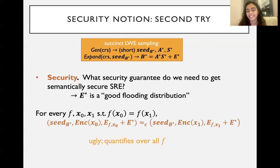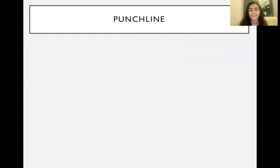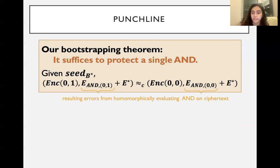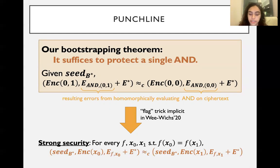So what can we do? This is basically the main punchline of our paper. We show that it suffices to protect a single AND operation, which means that all we need to show is that given seed for B*, if you have an encryption of 0 and 1 and encryption of 0 and 0, and then you homomorphically evaluate AND on these ciphertexts, that the resulting error can be flooded by E*. We use a hybrid argument and a flag trick that's implicit in Wee-Wichs, but not really abstracted out or specified well. And this gives us what we want, which is strong security.